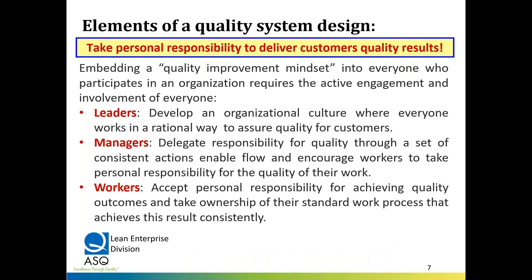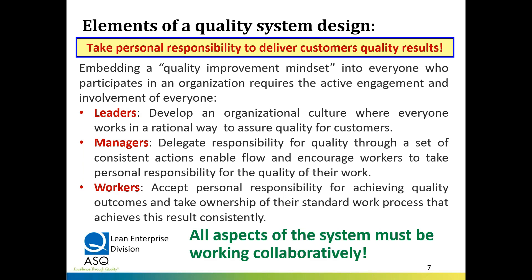Looking at this quality system, there are really three levels in how we have a quality improvement mindset. Leaders are responsible for the culture — how does everyone work together in a rational way to assure quality for the customer? Managers are delegating responsibility for quality through consistent actions to enable the flow of work and encourage workers to take personal responsibility for the quality of their work. Workers then accept that personal responsibility and take ownership of their standard work process. All aspects of the quality system must work together collaboratively — in Japan this was called the output of WA, or harmony.